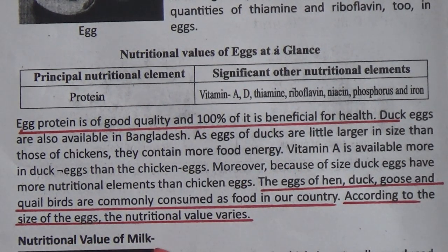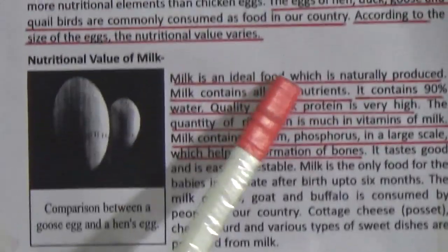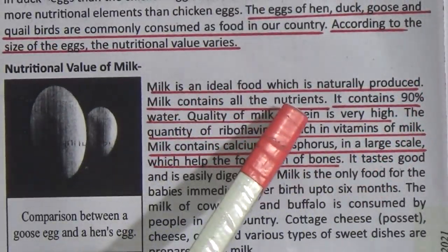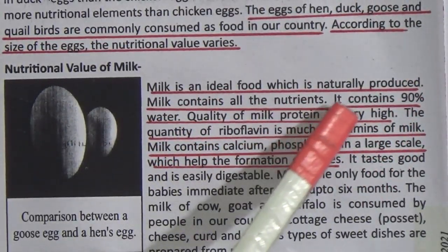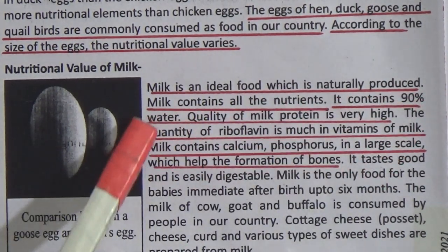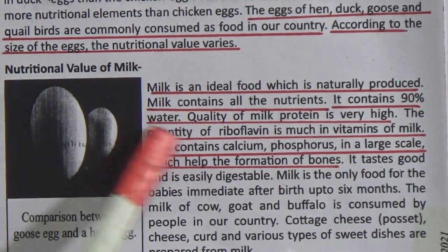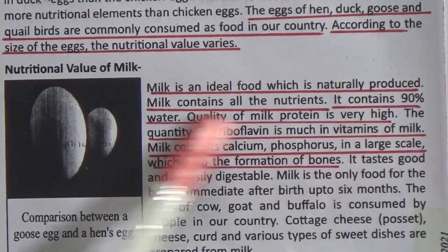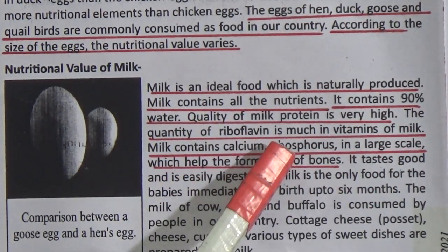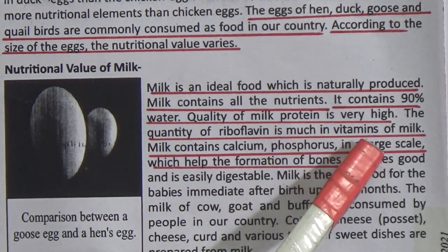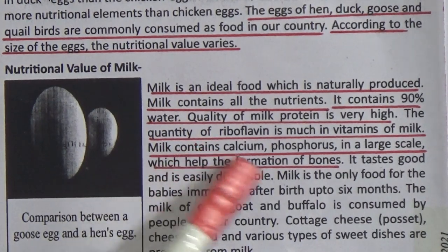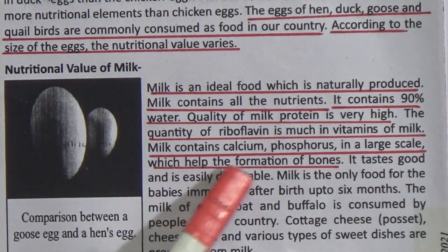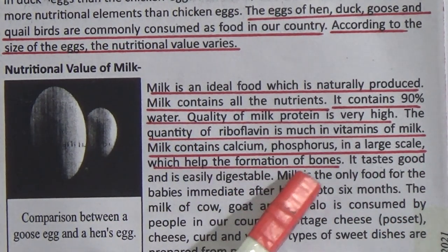Nutritional value of milk. Milk is an ideal food which is naturally produced. Milk contains all the nutrients and contains 90 percent water. The quality of milk protein is very high. The quantity of riboflavin is much higher among the vitamins in milk. Milk contains calcium and phosphorus in large quantities, which helps the formation of bones.